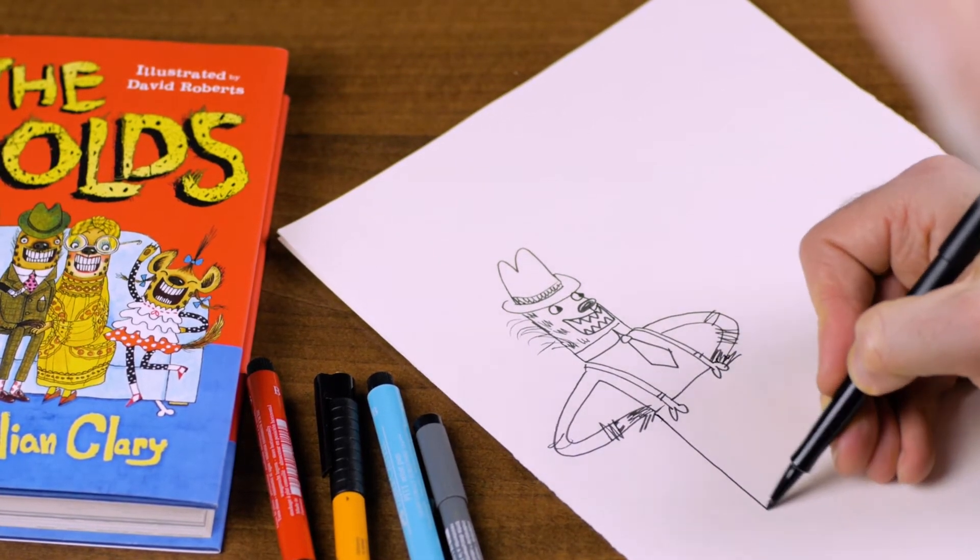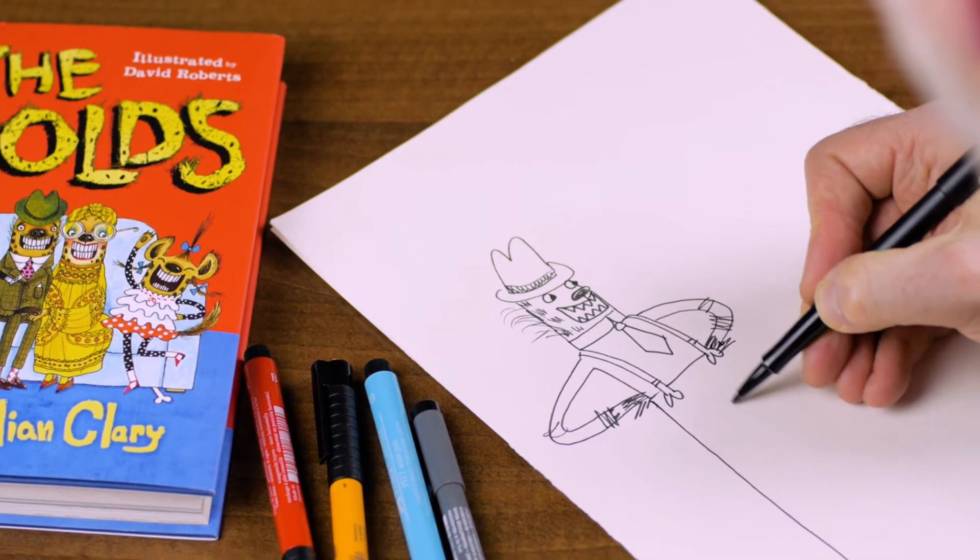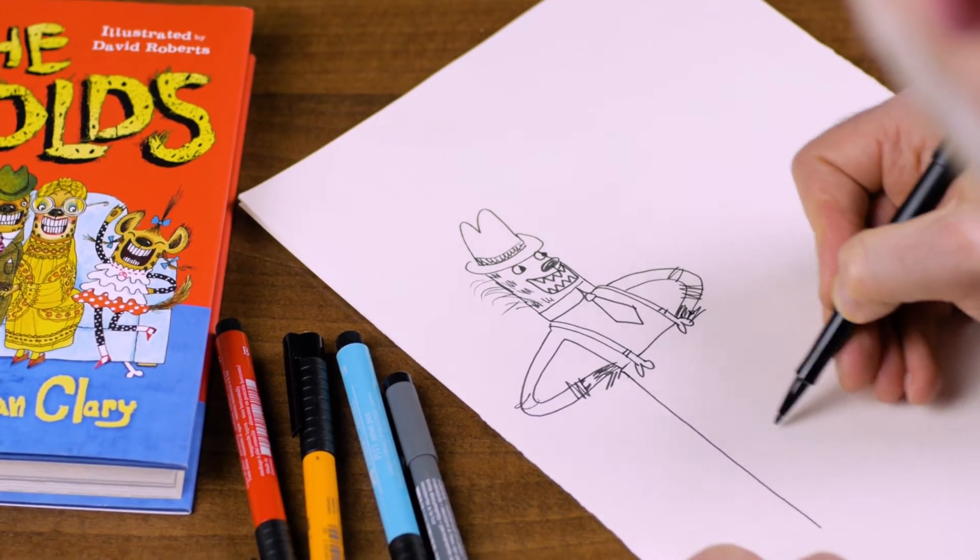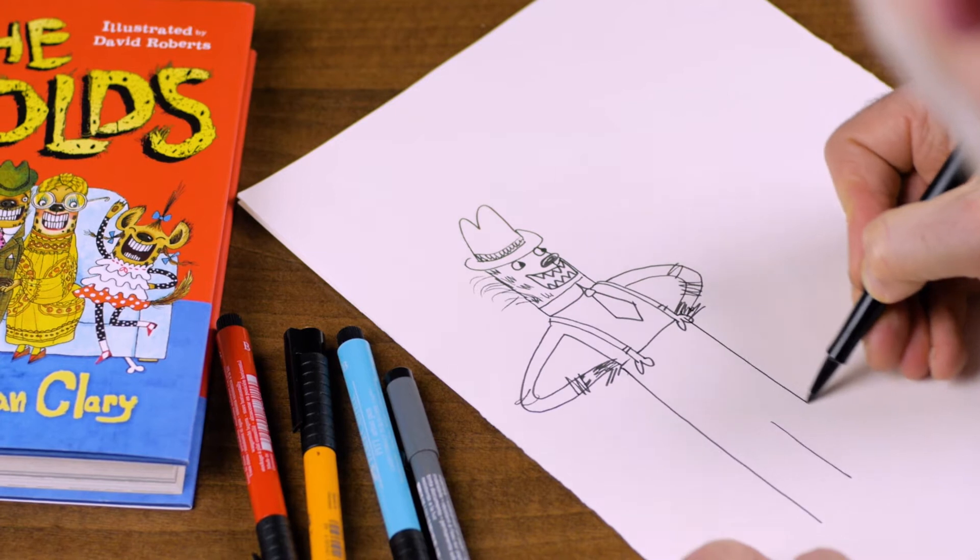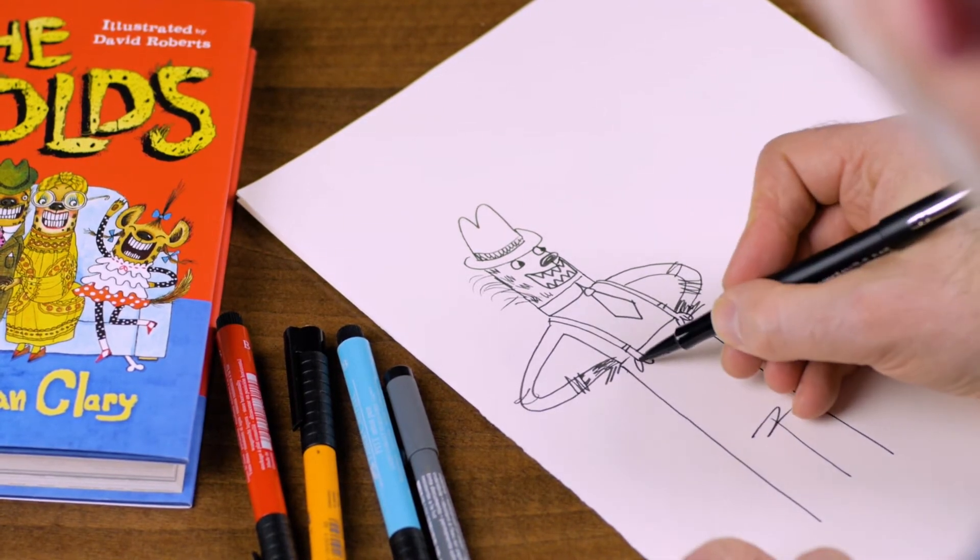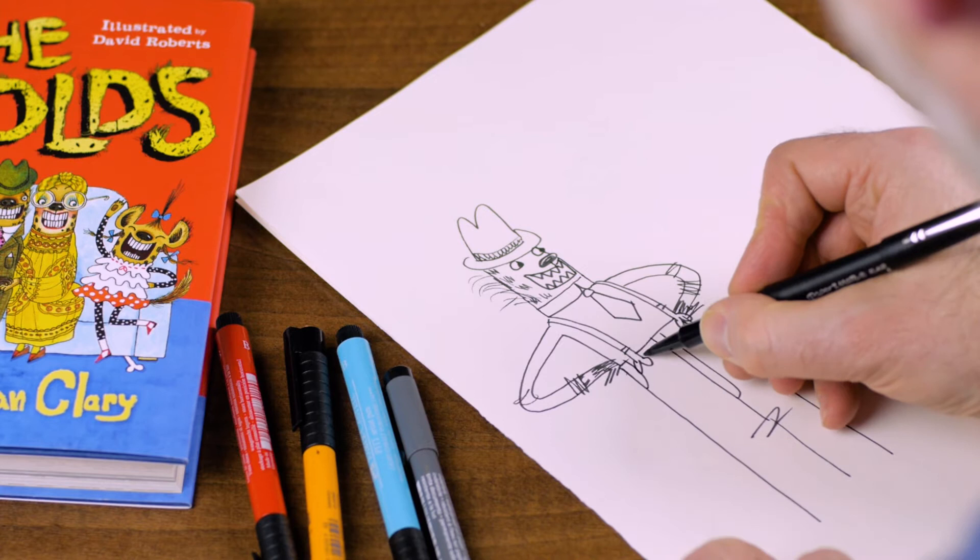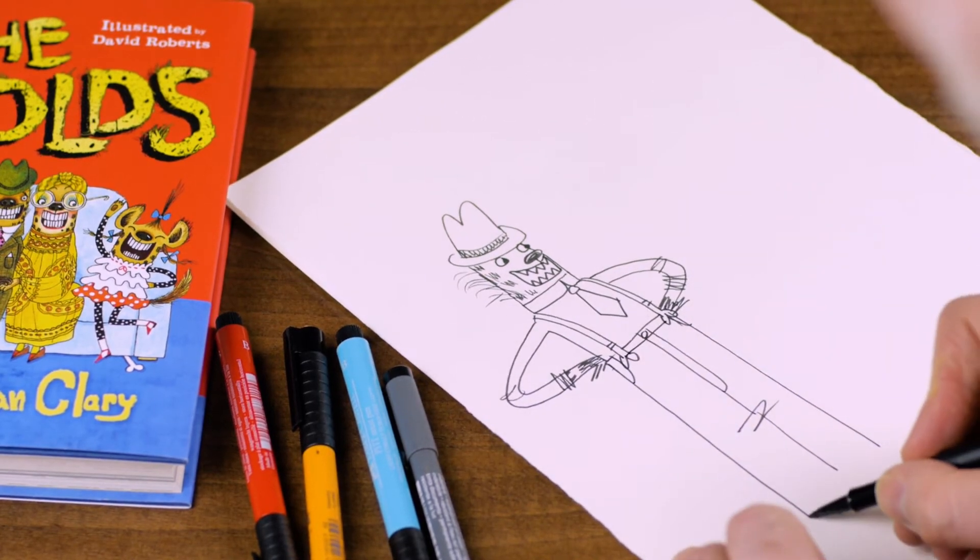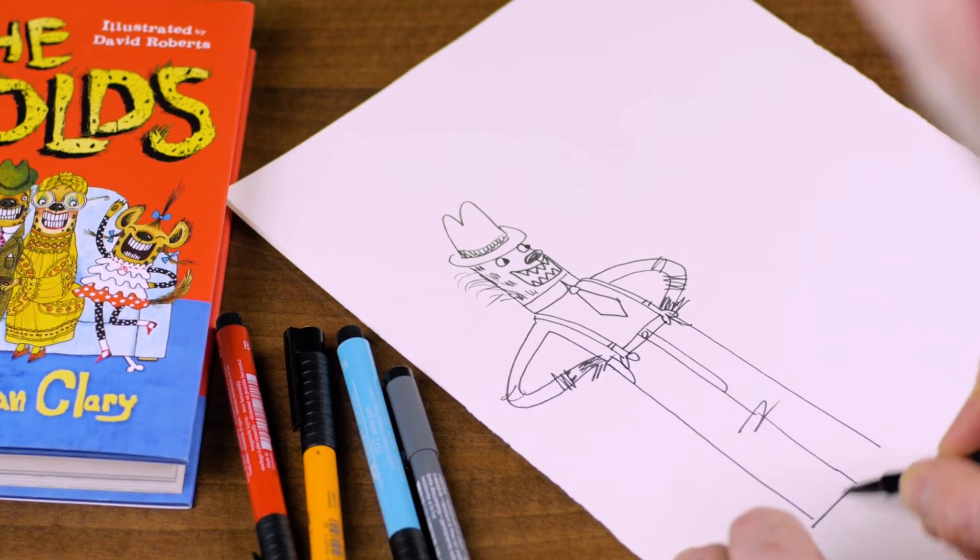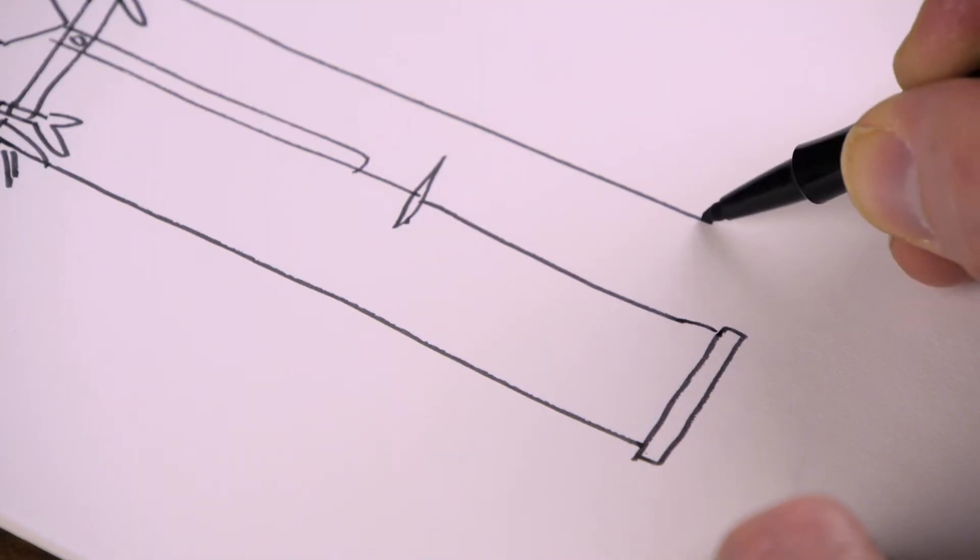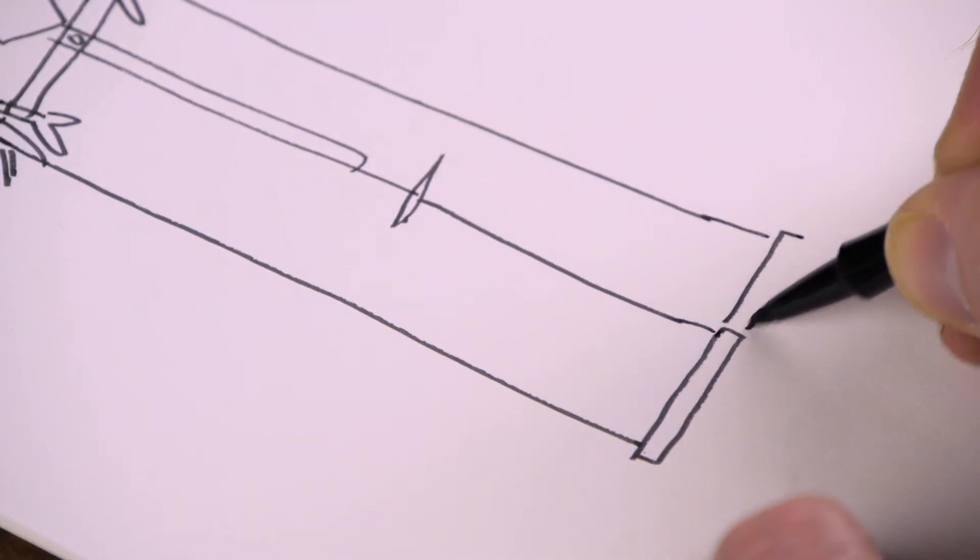So then we draw in the rest of his legs. These are his trouser legs. So we'll start there. And then pockets. And he's got turn-ups on his trousers. And we've just put a bit of detail like this.